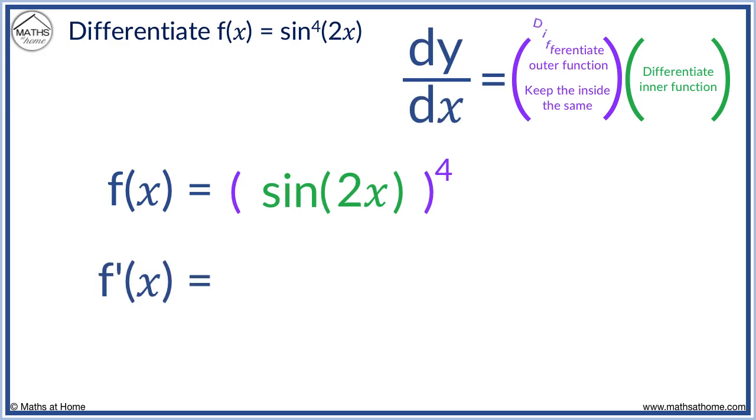We differentiate the outer function so the 4 comes down and 4 minus 1 equals 3. We keep sine 2x as sine 2x. We must remember to multiply this by the derivative of the inner function.